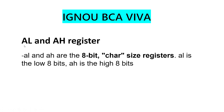Coming to next, we have AL and AH registers. AL and AH are 8-bit cache size registers. AL is the low 8-bit and AH is the high 8-bit — L means low and H means high.